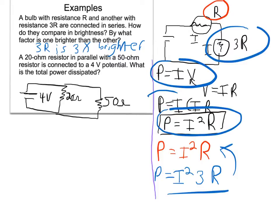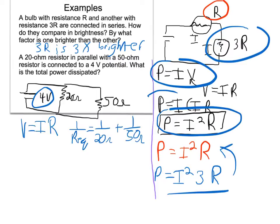According to Ohm's Law, we can figure out the current using V equals IR, since we have V and R. We need the equivalent resistance for this parallel circuit: 1 over R-equivalent equals 1 over 20 ohms plus 1 over 50 ohms. It's important to know how to do common denominators without a calculator — on AP multiple choice you won't have one. I recommend using 100 as the common denominator since 20 times 5 and 50 times 2 both equal 100. The equivalent resistance is 14.3 ohms, which makes sense because in a parallel circuit the equivalent resistance must be smaller than any individual resistor.